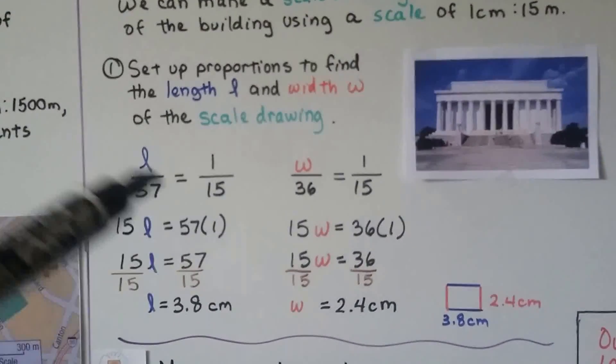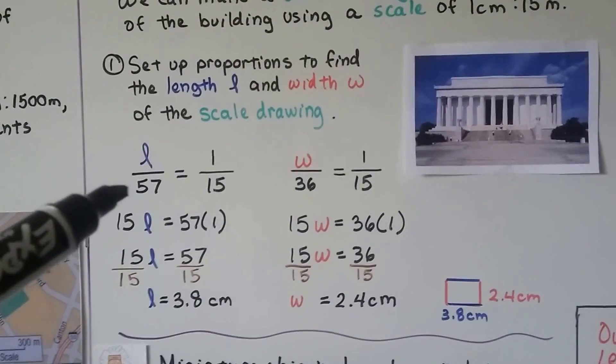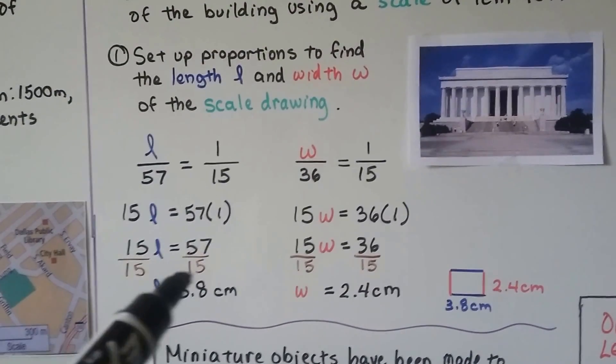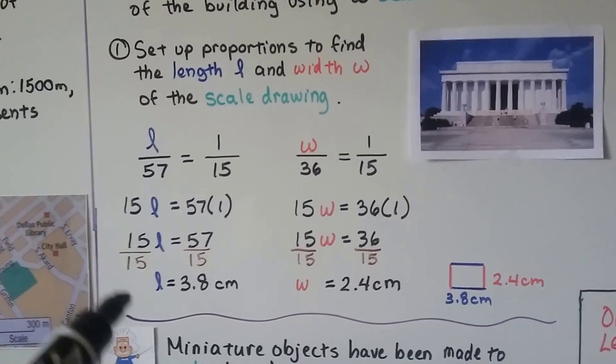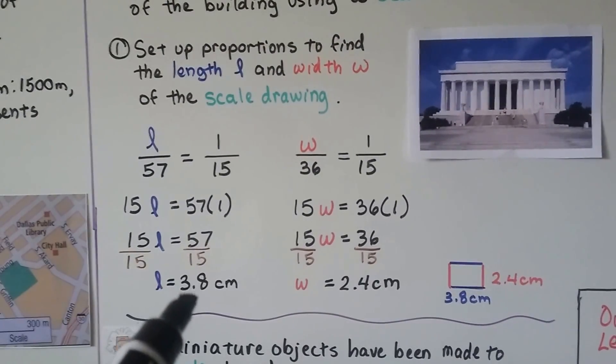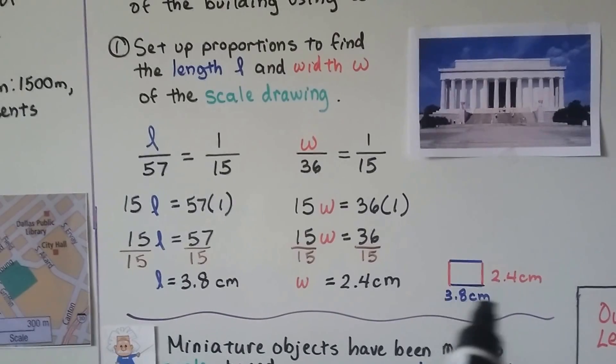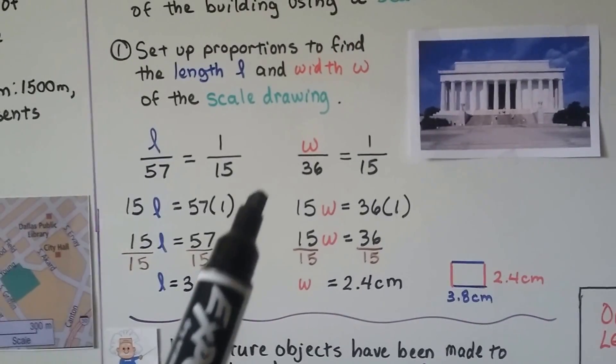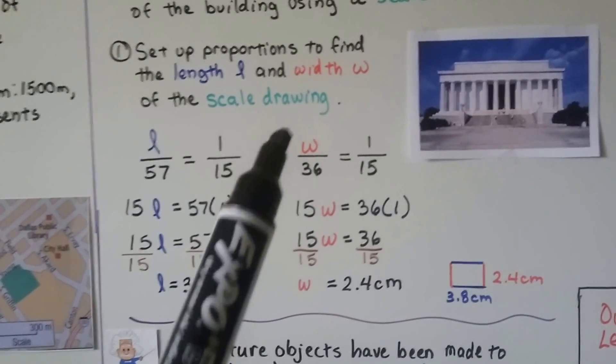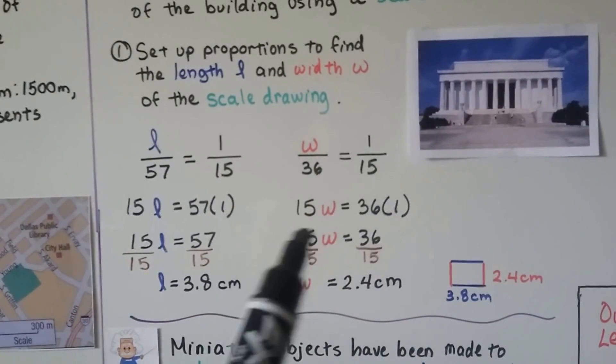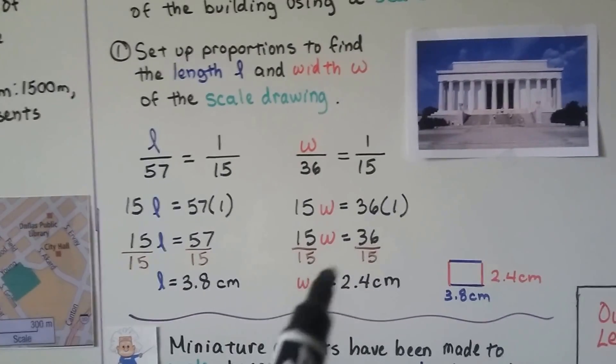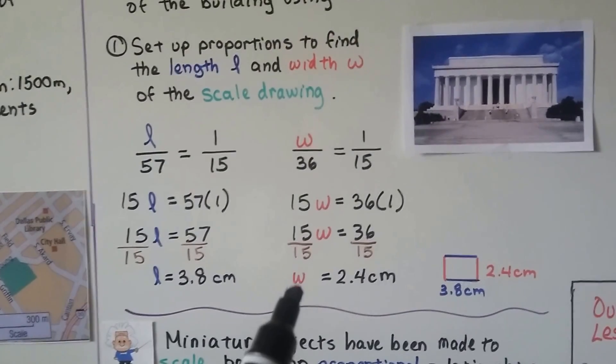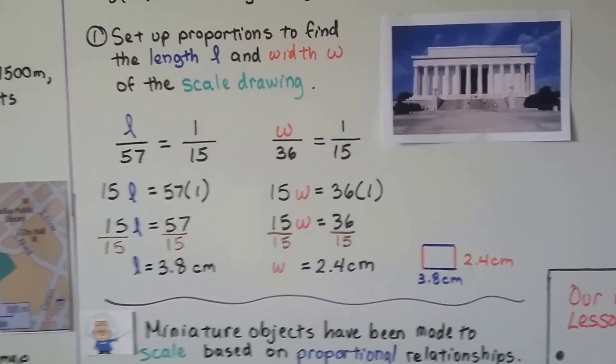We do cross products. We have 15L is equal to 57 times 1, which is 57. We can divide both sides by the 15 and find out that the width for our scale drawing would be 2.4 centimeters.